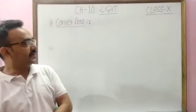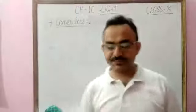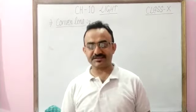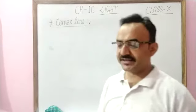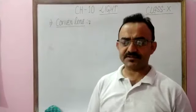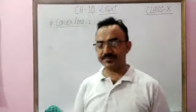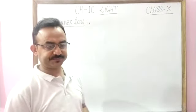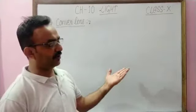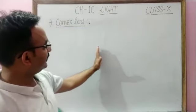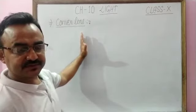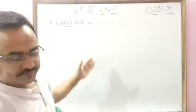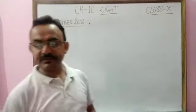Hello learners, as we are making discussion about obtaining images by convex lens. First case, we have discussed when object was placed between optical center and principal focus. That time we obtained a virtual, erect image behind the lens.